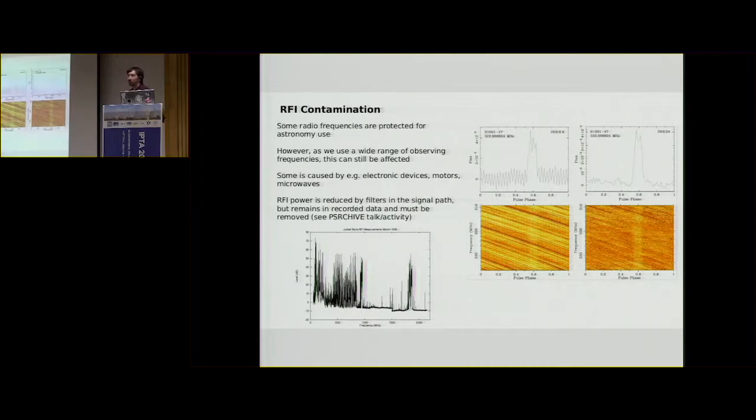So some other things we have to look out for are RFI contamination. We have big parts of the spectrum, or relatively big parts of the spectrum, that are protected for astronomical use. That's reducing over time as small parts of the spectrum get sold off for telecommunications, for example. But even so, these emissions can produce harmonics that can find their way into our telescopes.